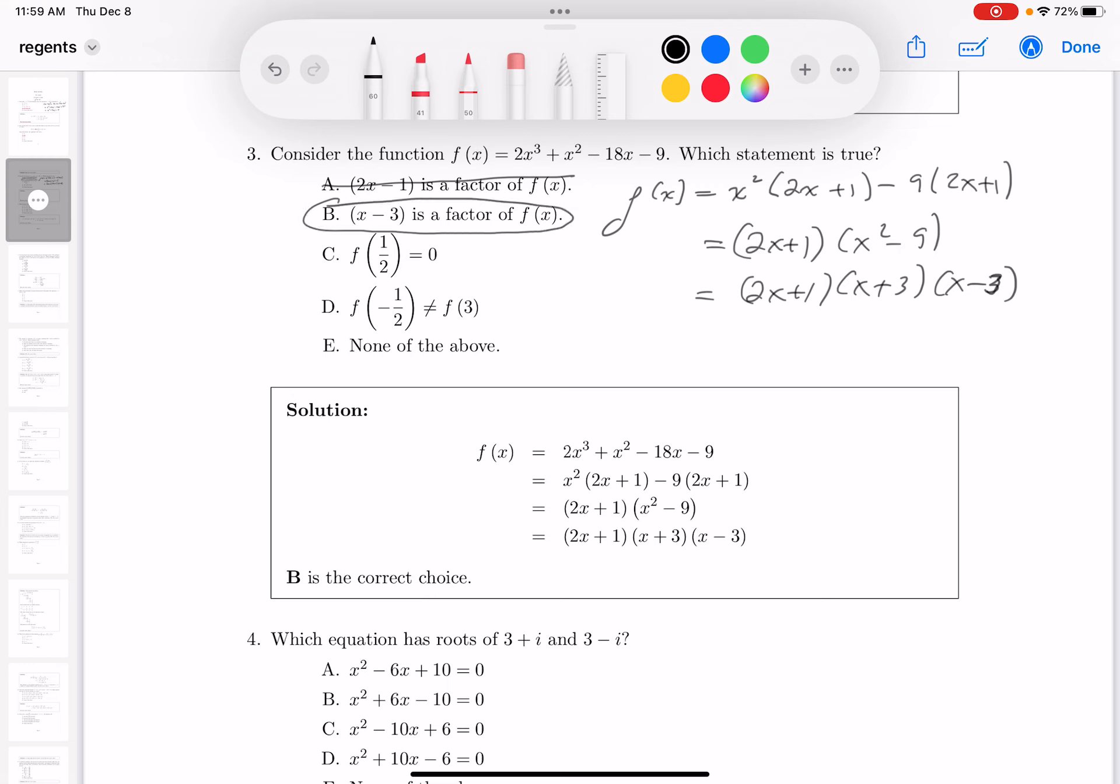All right, now certainly which statement is true. I would just stop there and say B is true, especially if it's a multiple choice, and proceed forward. Again, you could verify the other ones if you want, but the bottom line is that C is not true, D is not true, because f of minus 1 half and f of 3 would both equal 0, and certainly none of the above would not be in the category. So B is true. Thank you.